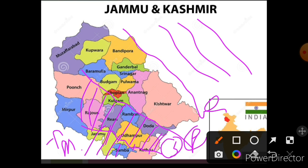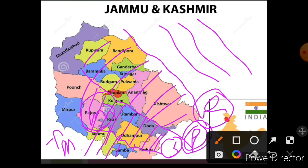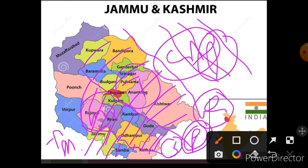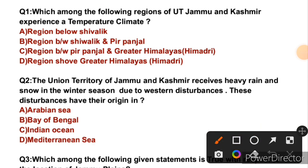The region between Shivalik and Pir Panjal is called the Jammu Modernis region, which has a moderate temperate climate. Moving above that, between Pir Panjal and Greater Himalayas — that is the Kashmir Valley region — temperate climate is found. And above Greater Himalayas, in Ladakh, cold arid climate prevails. So the right answer is C — Kashmir Valley. Please write in the comment section how many climatic zones Jammu and Kashmir is divided into.